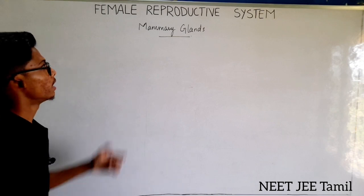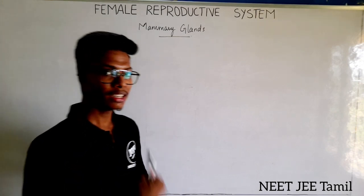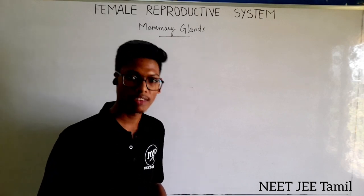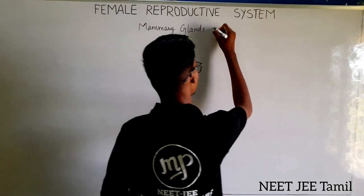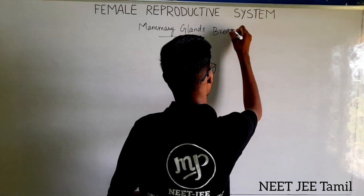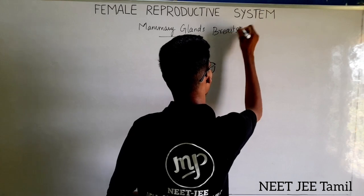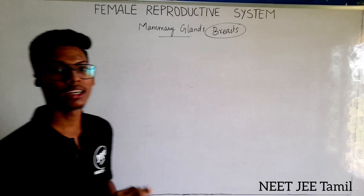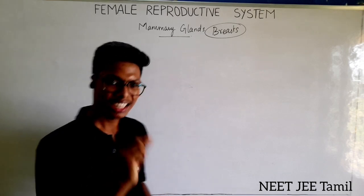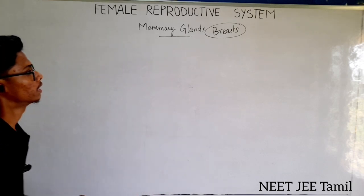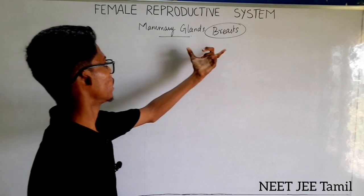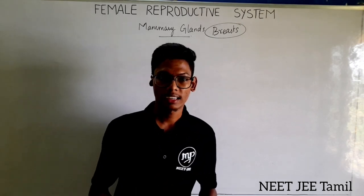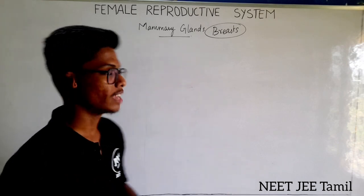In females, during puberty, the mammary glands start to develop and the developed structure is called the breast. In males, development is not seen and only the nipple alone is present. A developed mammary gland is a characteristic of all females.